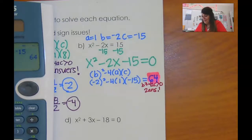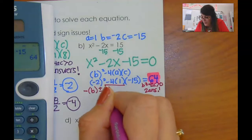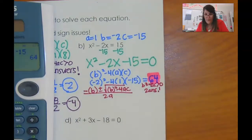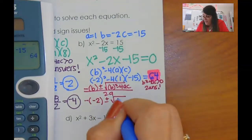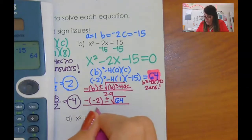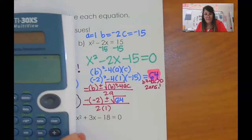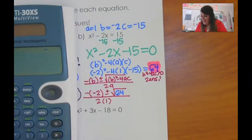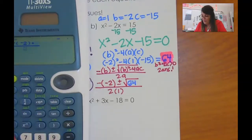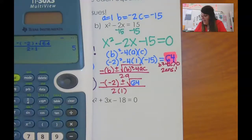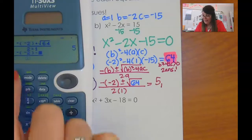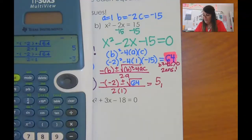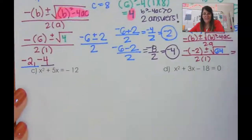I plug in: negative b plus or minus the square root of b squared minus 4ac, all over 2a. So it's negative negative 2 plus or minus the square root of 64, all over 2 times 1. Using the calculator with the fraction button: negative negative 2 plus the square root of 64 over 2a gives me 5. Then negative negative 2 minus the square root of 64 over 2a gives me negative 3. Those are my two answers.